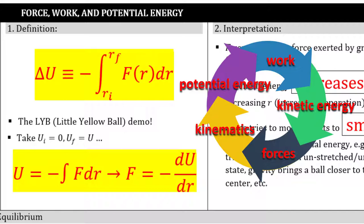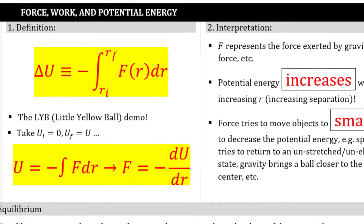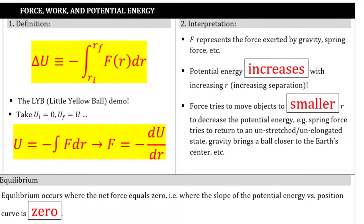Motion analysis or kinematics. Force analysis, also known as dynamics. Work, kinetic energy, and now potential energy are all mixed in box one. Box two, the interpretation. Potential energy increases with increasing separation. Conservative forces try to bring objects together. They try to make the separation between objects smaller. A spring wants to return to its equilibrium position. An object wants to fall towards the center of the Earth.